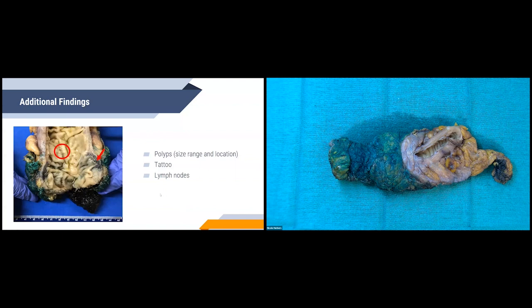Additional findings include any polyps — circled with the red circle — for which we give size range and location. We also note any tattoo, shown with the red arrow as that black area. The tattoo is placed before surgery for the surgeon to identify the tumor location, usually at the site of the tumor or directly distal to it. We also document all lymph nodes, noting their size and appearance.